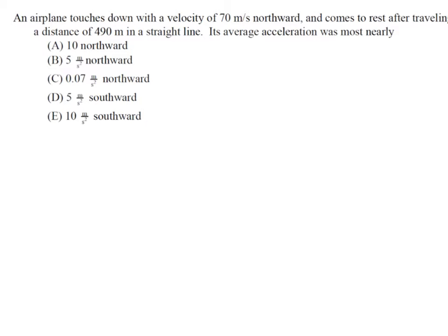Let's highlight the things that are important to pull out here. We're given an initial velocity and it is northward. The object then comes to rest - that's the final velocity - having traveled a distance of 490 meters along a straight line.